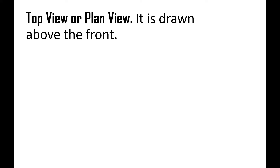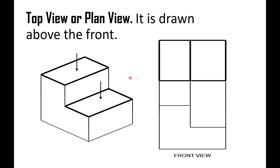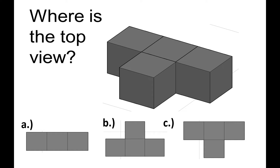Top view or plan view is drawn above the front. This is an example of the pictorial view of an object. This arrow represents the top view of this object. When drawn, this L-shaped object is the front view, and parallel to it is the top view. The arrow at the top represents the top view of the object. Now let's answer: where is the top view of this object — letter A, B, or C? If your answer is letter C, you are correct. We have one, two, three blocks at the top and one block at the bottom of the object, so the answer is letter C.